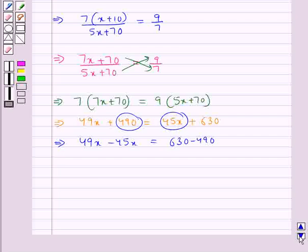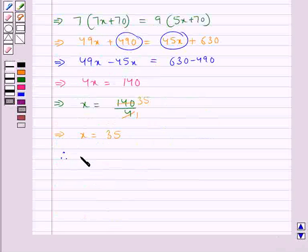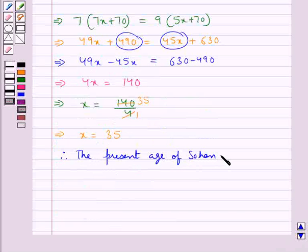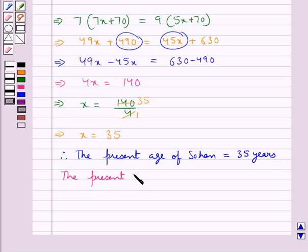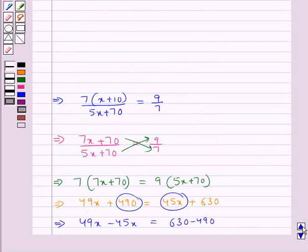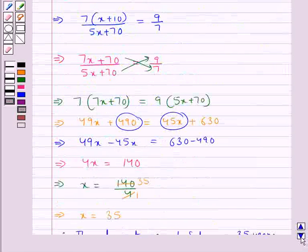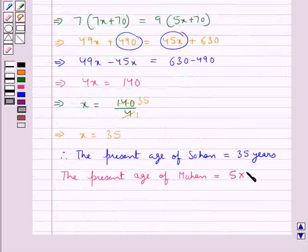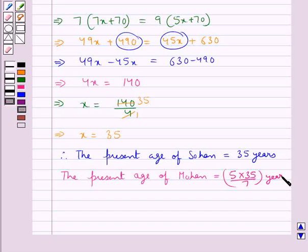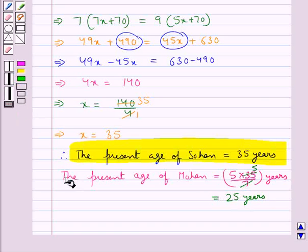So we now say that the present age of Sohan is equal to 35 years. The present age of Mohan is equal to 5x upon 7 years. Putting the value of x as 35, we get 5 into 35 upon 7 years. Since 5 times 35 is 175 and 175 upon 7 is 25, this is equal to 25 years. So the present age of Sohan is 35 years and the present age of Mohan is 25 years.